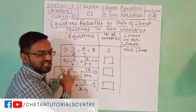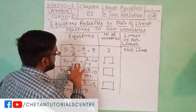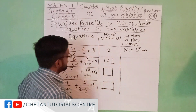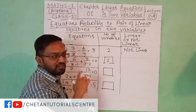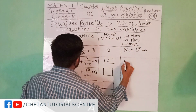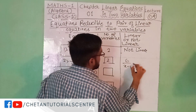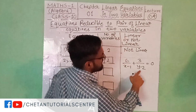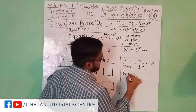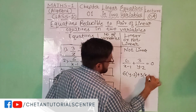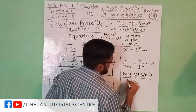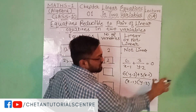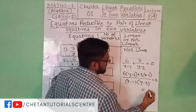Now in question number 2, we need to check whether the equation is linear or non-linear. The number of variables here is 2 — x and y. The equation is: 6 upon x minus y, plus 3 upon y minus 2 is equal to 0. When we do cross multiplication, we get 6(y minus 2) plus 3(x minus 1) upon (x minus y)(y minus 2) is equal to 0. The denominator multiplied by 0 becomes 0.